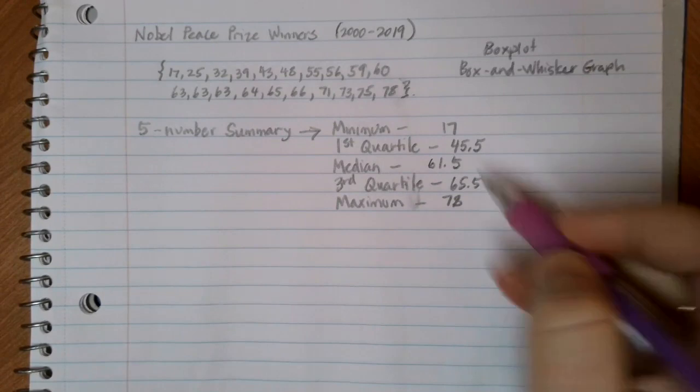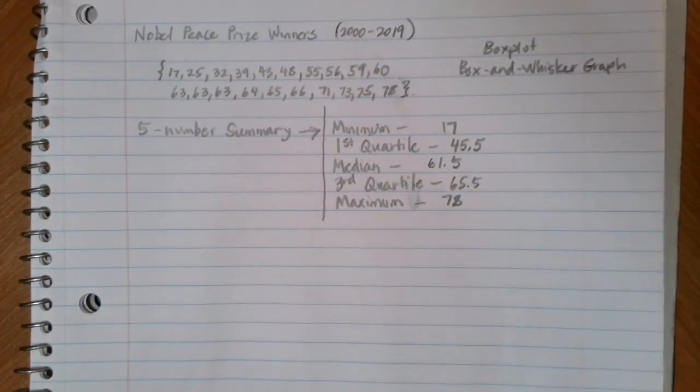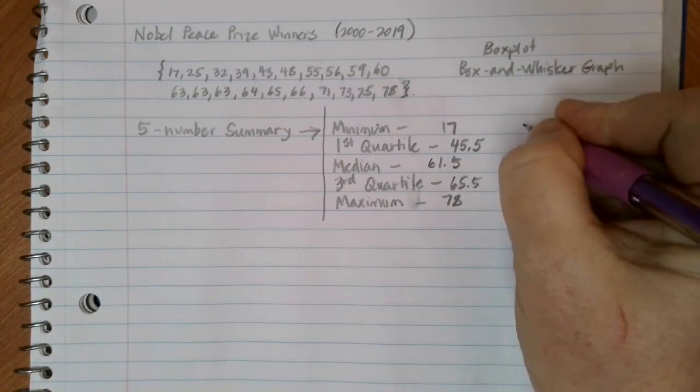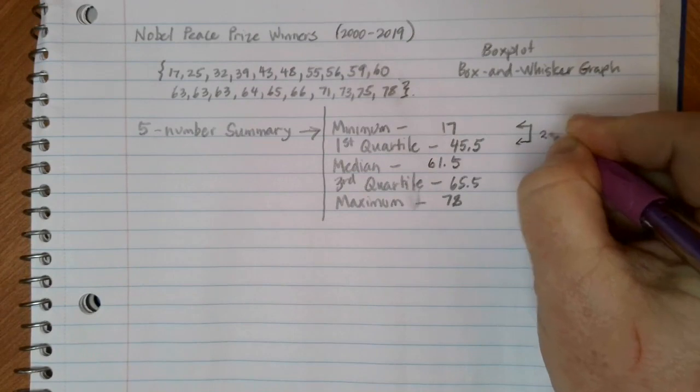These five numbers are the ones that we use to create our box plot or our box and whisker graph. Essentially, what we're doing when we create a box and whisker graph is we're splitting it up into quarters.